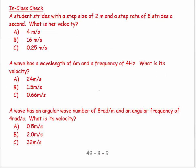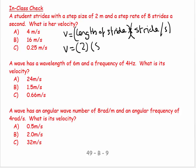A student strides with a step size of two meters and a step rate of eight strides a second. What is her velocity? So velocity is equal to length of stride times stride per second. So V is going to equal two meters times eight strides per second, which equals 16 meters per second.